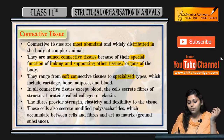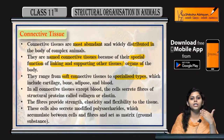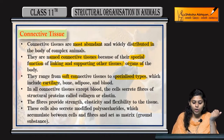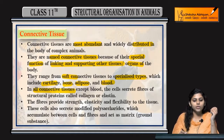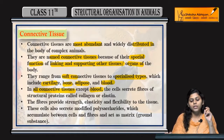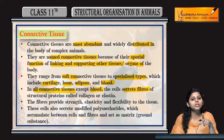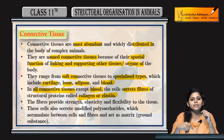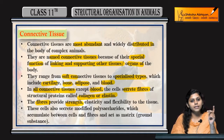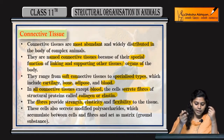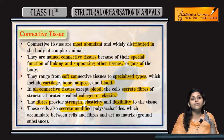In all connective tissues, except blood, the cells secrete fibers of structural proteins. Those structural proteins are collagen and elastin. These fibers provide strength, elasticity, and flexibility to the tissues.